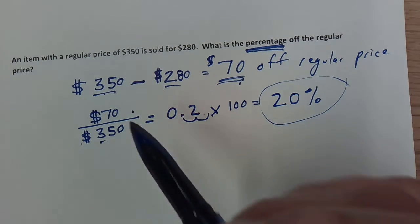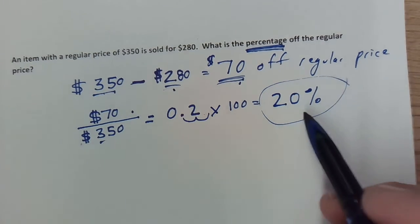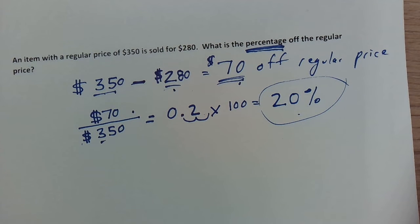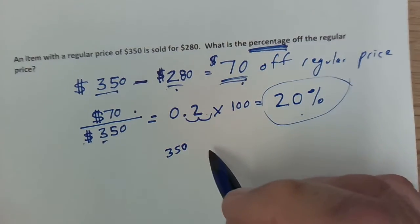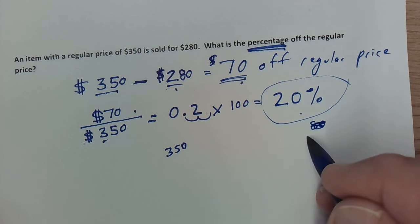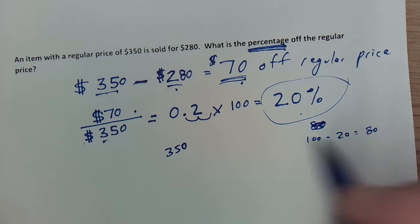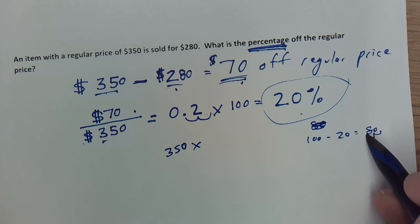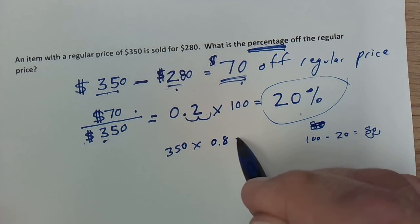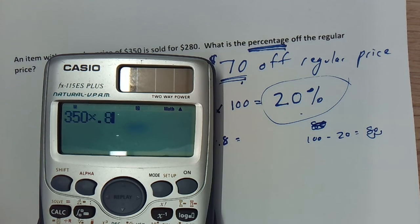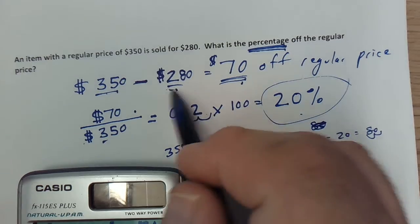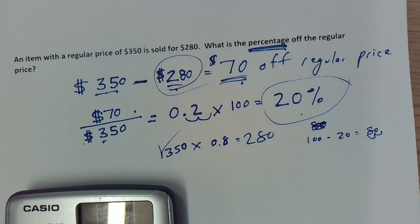So if a $350 item is being sold for $280, that represents a 20% savings. You can double check your work by working in reverse — 100% minus 20% leaves 80%, so we want 80% of $350. Moving the decimal place gives us 0.8, and $350 times 0.8 is $280, which is the sale price. So this is our check to make sure it's correct, and in this case it is.